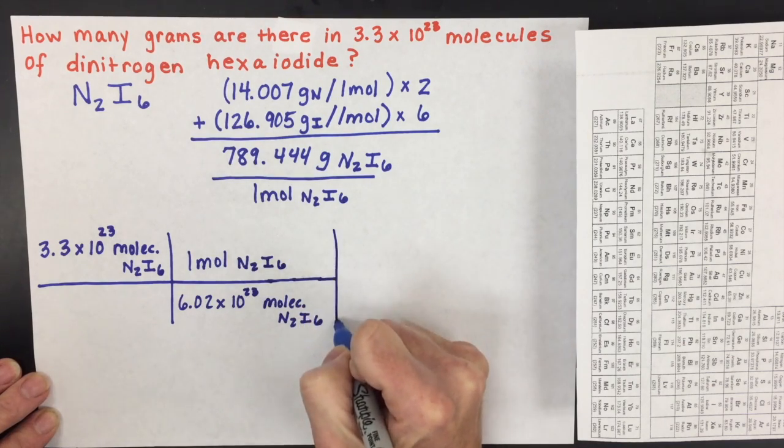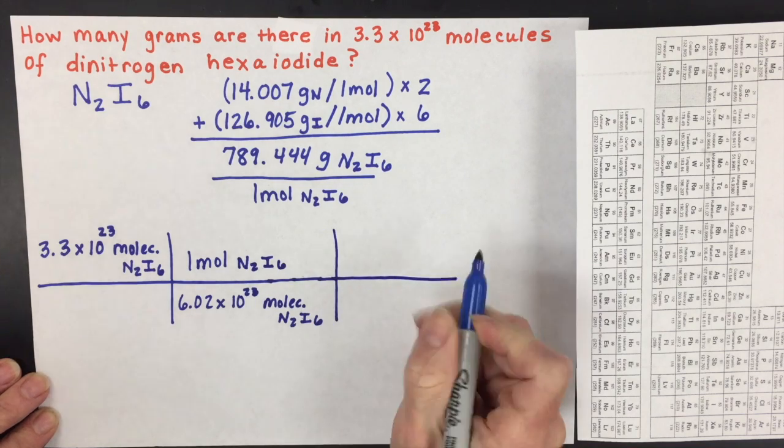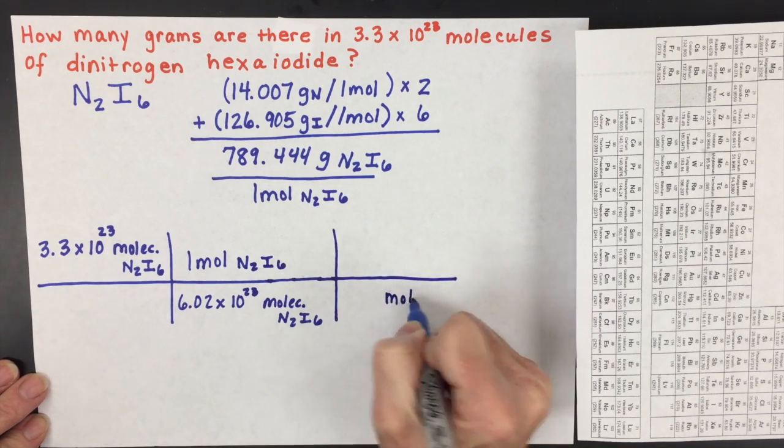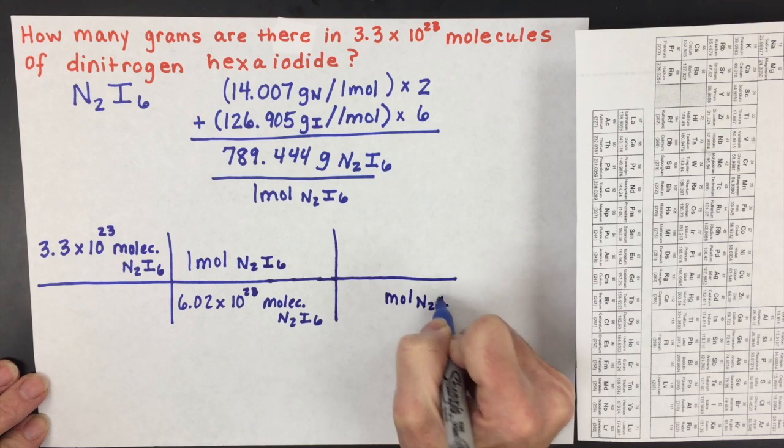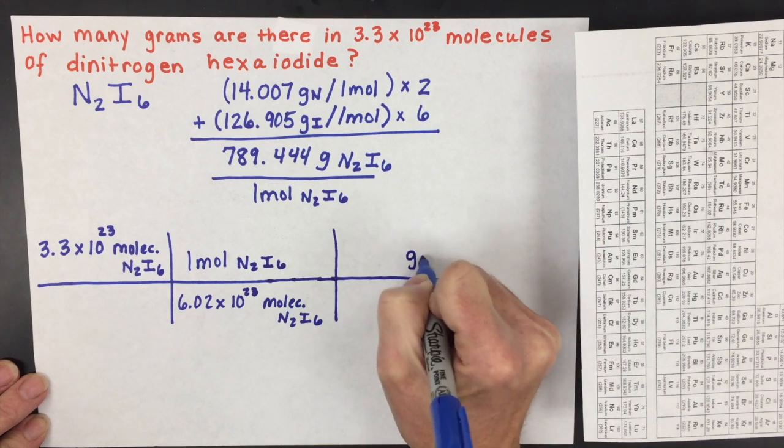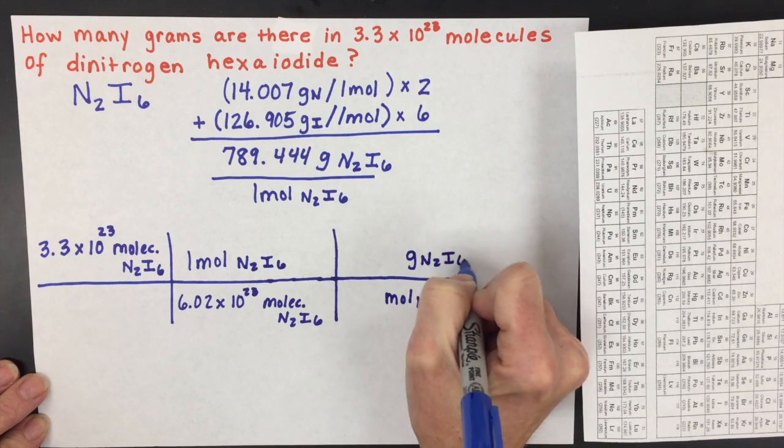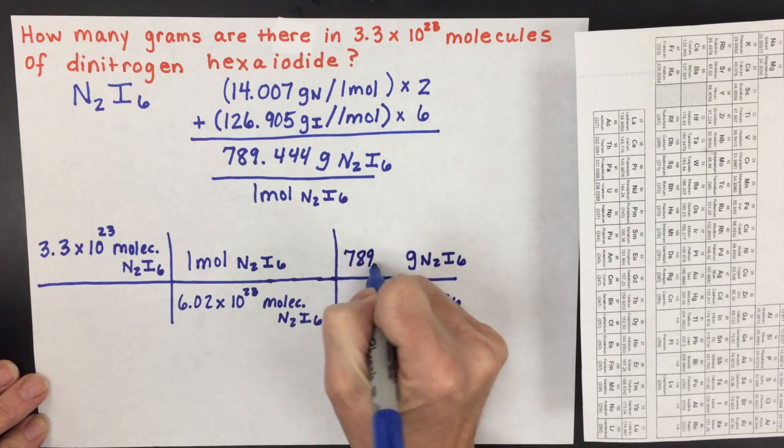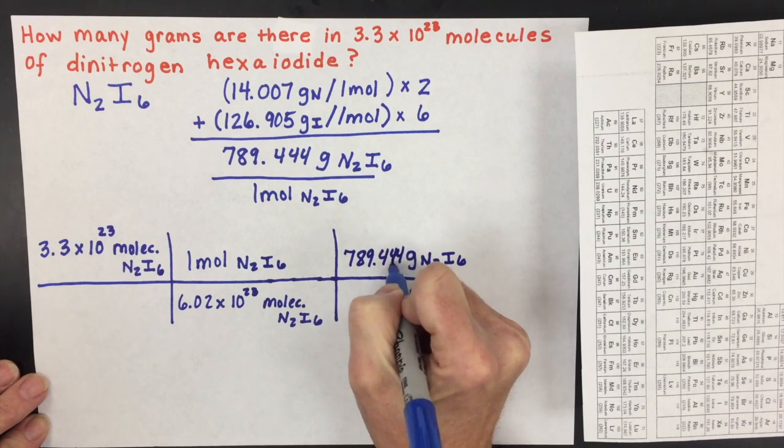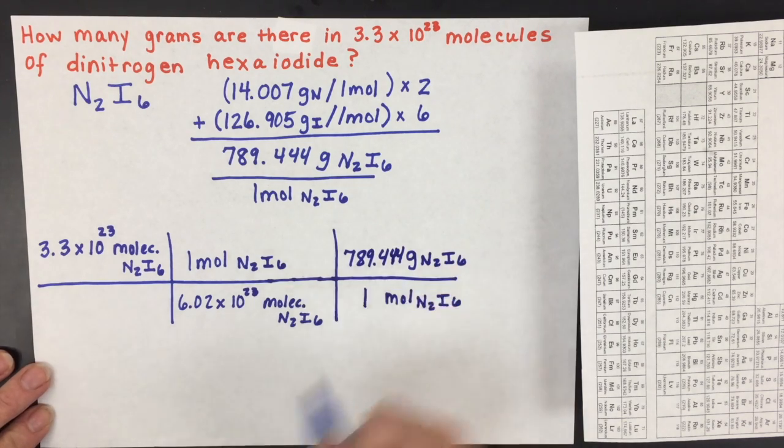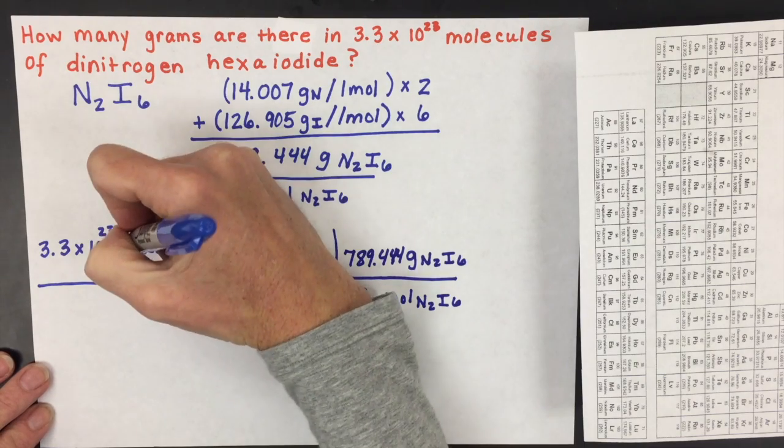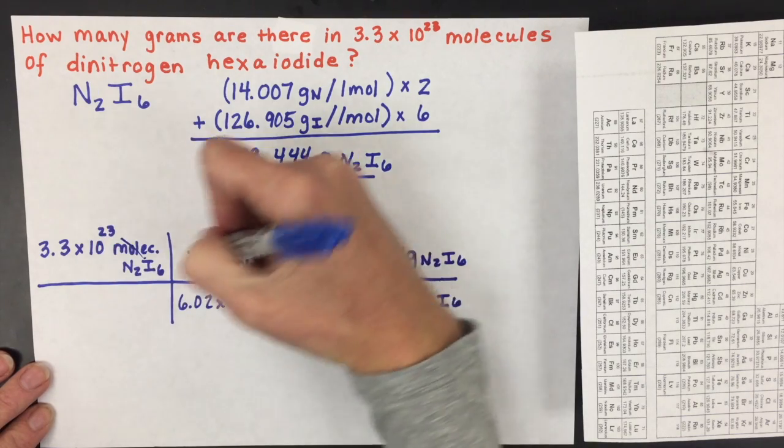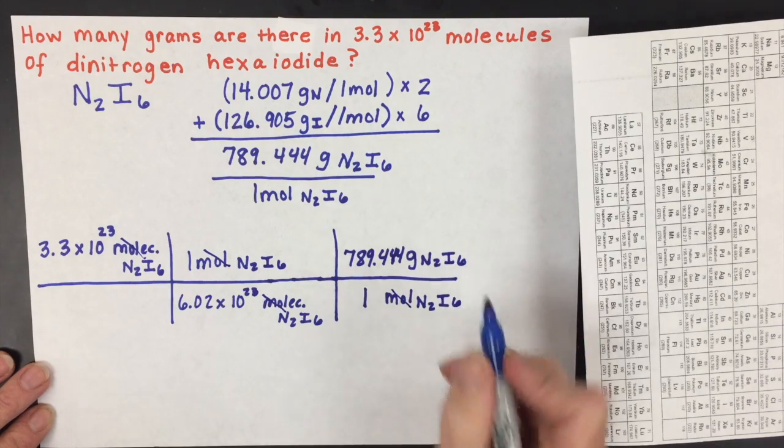But we would like to have this in grams, so we have one more conversion. And that's to convert from moles of this covalent compound to grams of this compound. And the molar mass of 789.444 will go on the top of this conversion, and one will go on the bottom. That's to convert these molecules to moles and from moles to grams.